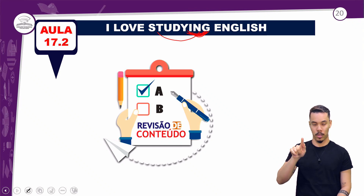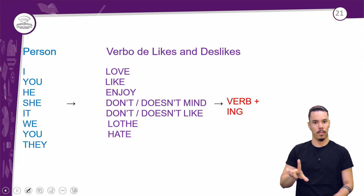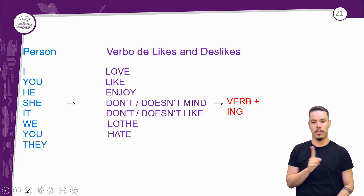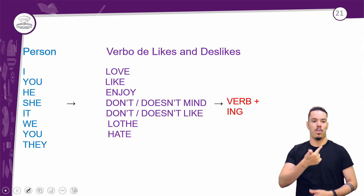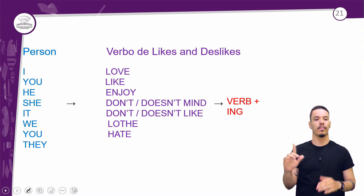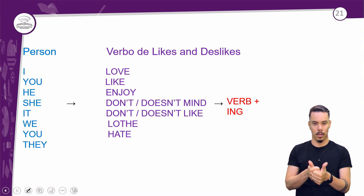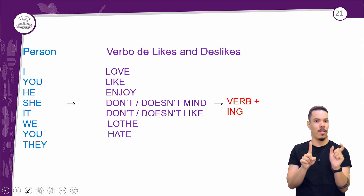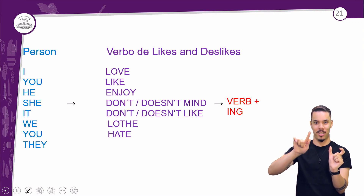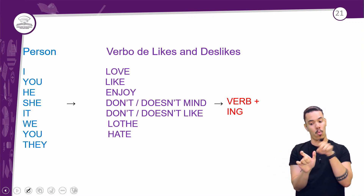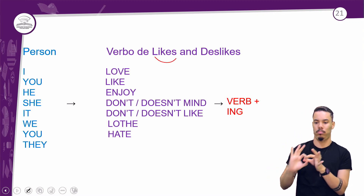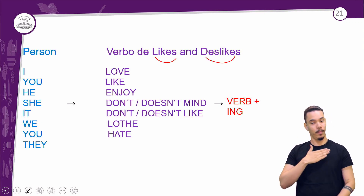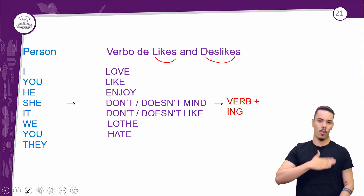Então, basicamente, os verbos de preferência — que não são somente esses que vocês estão vendo hoje, existem outros — eles vão vir acompanhados de ING. Não eles, perdão. O que vai vir com o ING é o próximo verbo que diz a ação que eu gosto, desgosto, odeio, ou assim por diante.